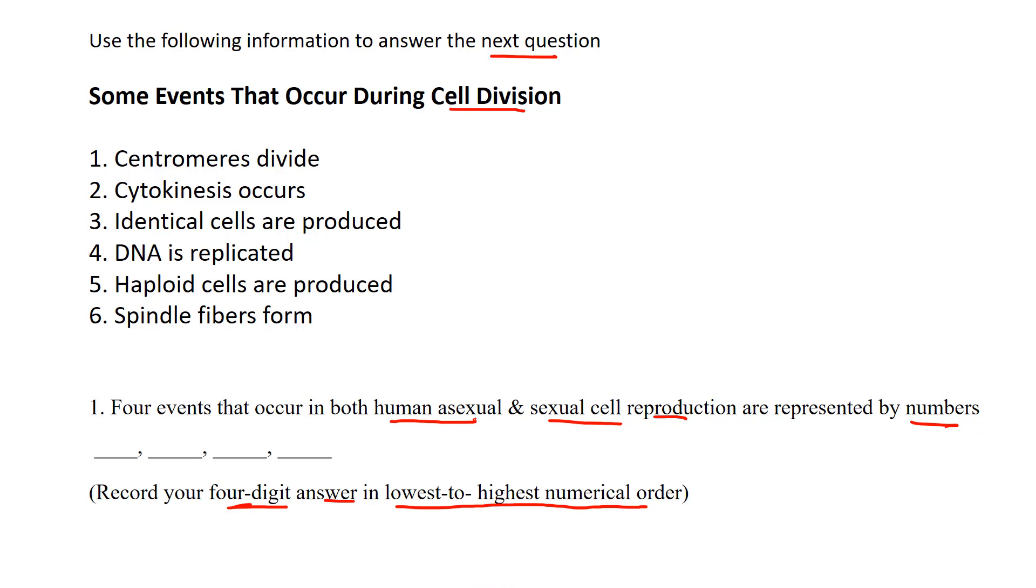So human asexual reproduction - a lot of people are thrown off by that for some reason. People think asexual reproduction is only for bacteria, but humans do asexual reproduction as well. Remember, asexual reproduction produces clones, genetically identical clones. If I have a skin cell and I want to produce two skin cells, I want to make sure those skin cells are identical. I want the cell producing two genetically identical diploid daughter cells, right?